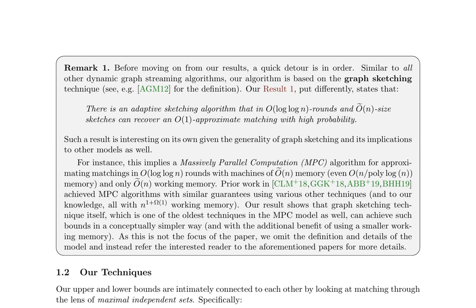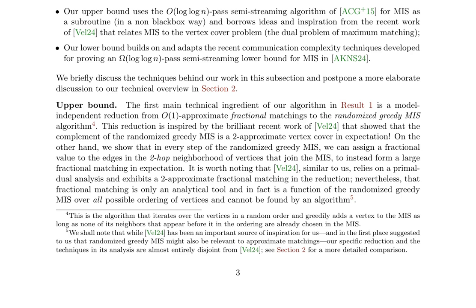A novel approach leverages graph sketching to achieve an O(1) approximate matching in O(log log n) rounds with O(n) size sketches, implying a massively parallel computation (MPC) algorithm for approximating matchings in O(log log n) rounds using machines of O(n) memory. The upper bound utilizes the O(log log n) pass semistreaming algorithm for maximal independent sets (MIS) as a subroutine, drawing inspiration from recent work relating MIS to vertex cover. The lower bound builds on and adapts communication complexity techniques developed for proving an Ω(log log n) pass semistreaming lower bound for MIS.